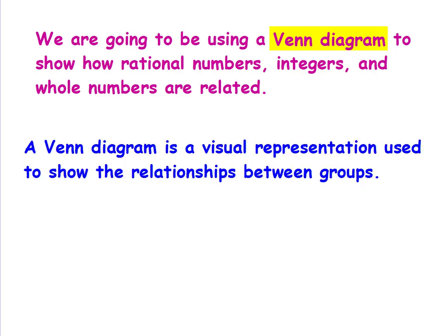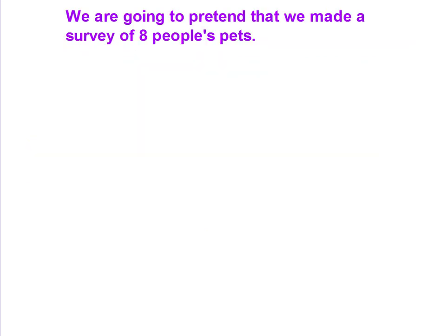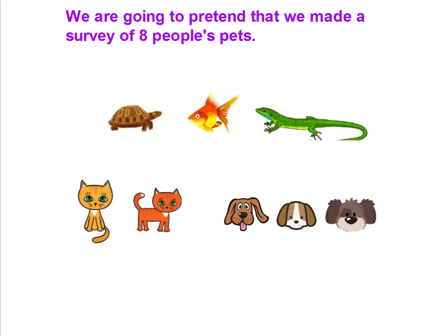A Venn diagram is a visual representation used to show the relationships between groups. First, let's look at an example of a Venn diagram that you should remember from elementary school. We're going to pretend that we made a survey of eight people's pets, and here are all of the pets. We will group these together and call them all pets.